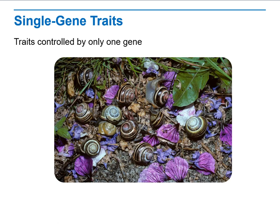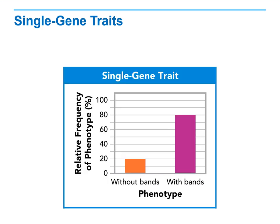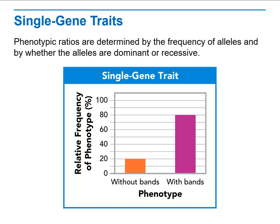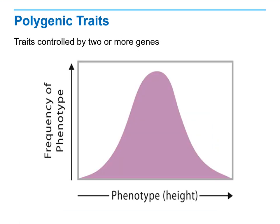Some traits are single-gene traits, meaning only one gene controls the trait. For single-gene traits, the phenotype ratios are determined by the frequency of alleles and by whether the alleles are dominant or recessive.